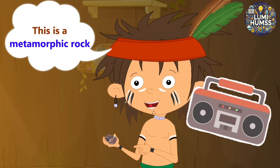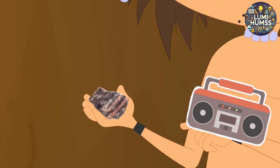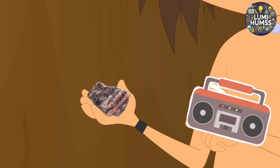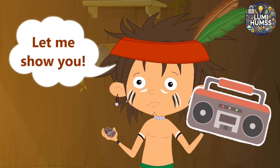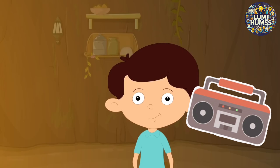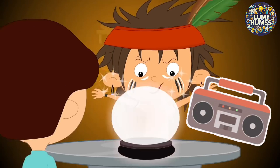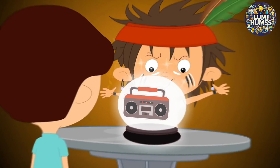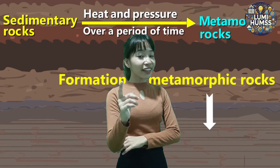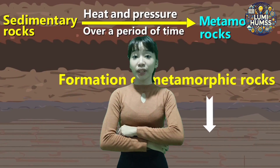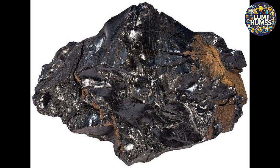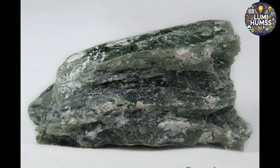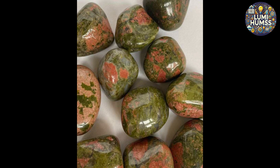Metamorphic rock is the second major type of rock. These are formed when an existing rock is subjected to very high temperatures or very high pressures. Under the metamorphic rock, you can find anthracite, lapis lazuli, soapstone, unakite, and marble.